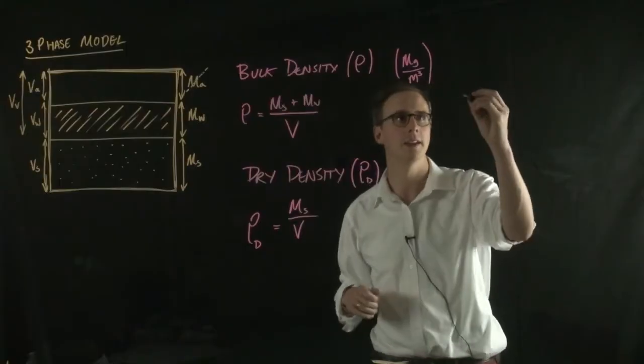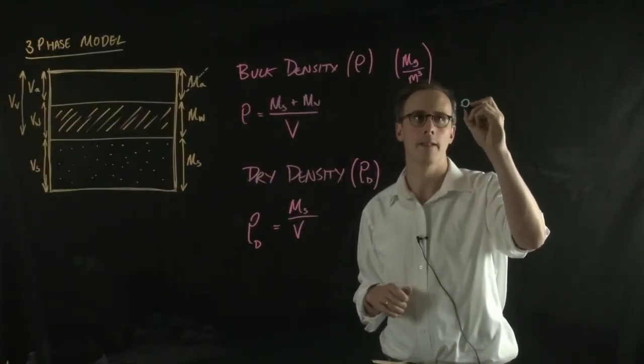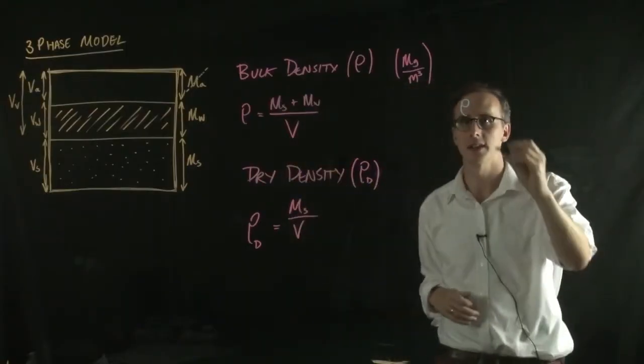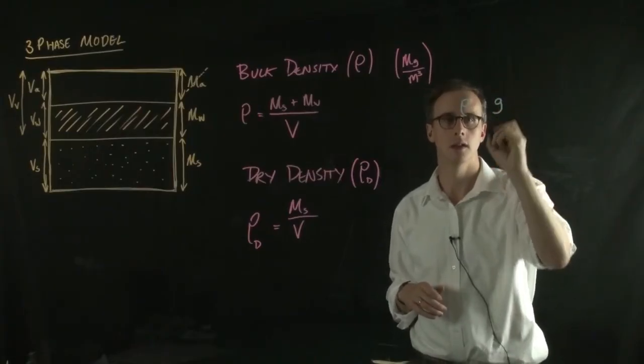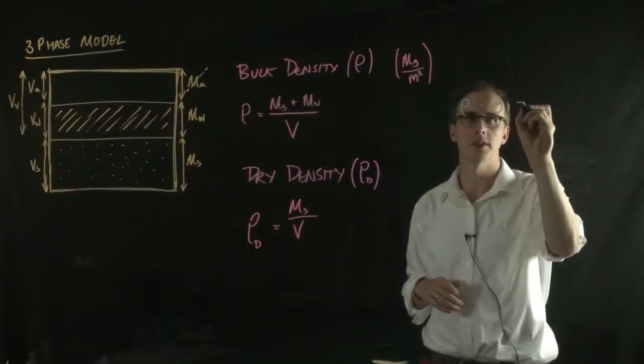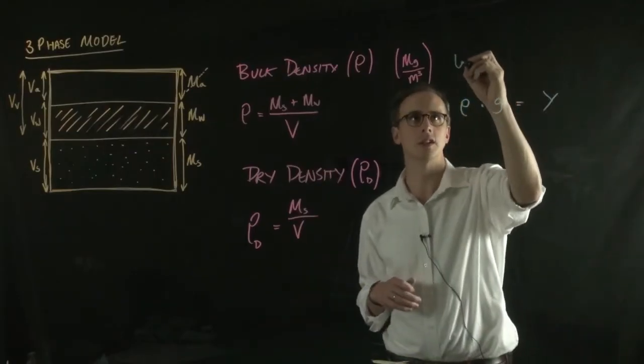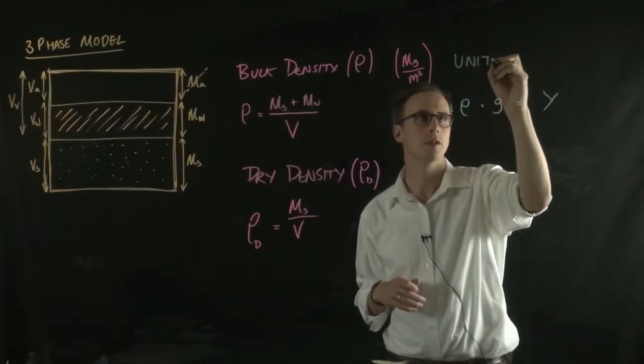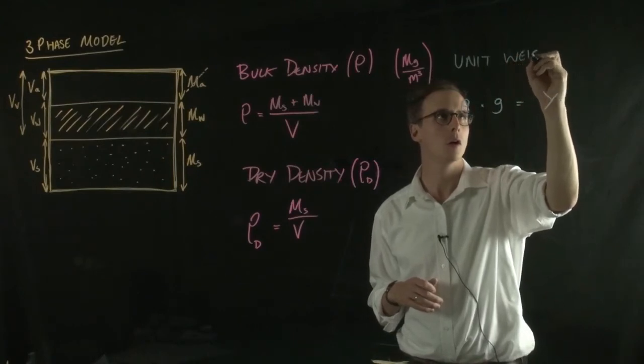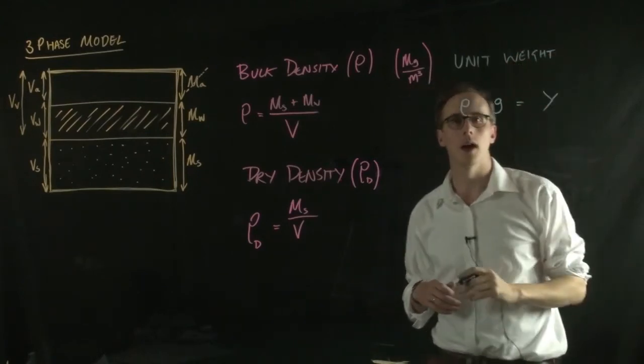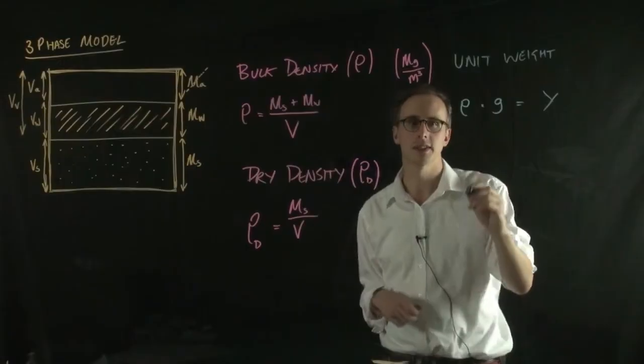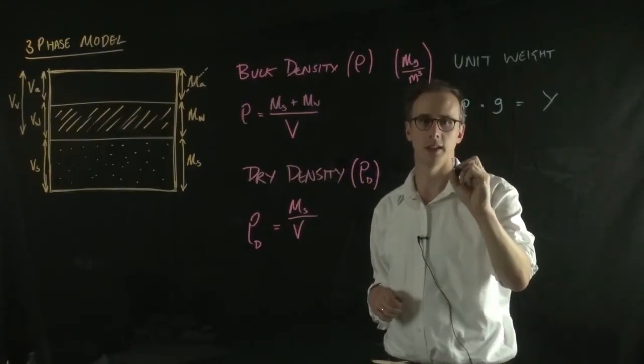So if we take the bulk density and we multiply it by the acceleration due to gravity, we get a parameter called the unit weight or gamma. So this is the unit weight of soil. And we can also do the same thing for the dry density and get the dry unit weight.